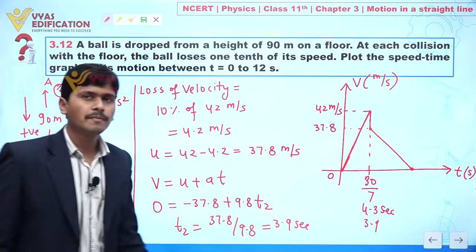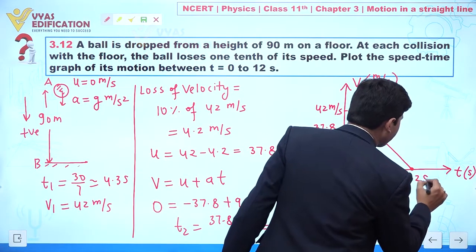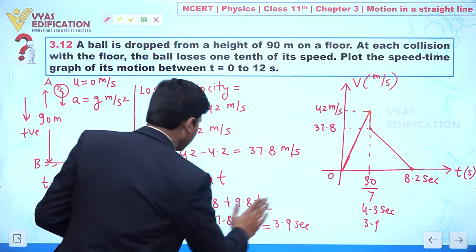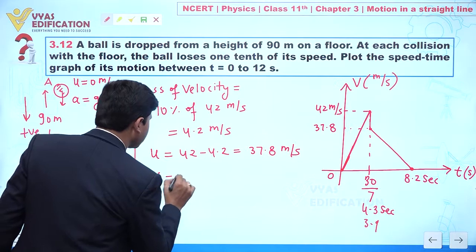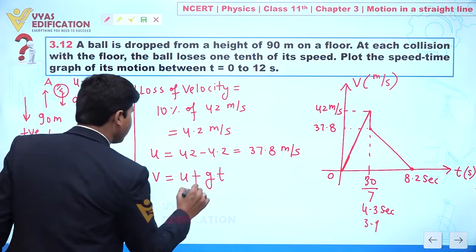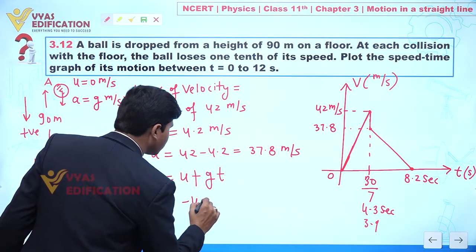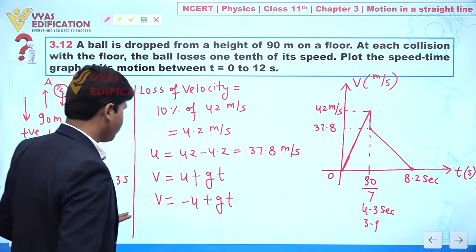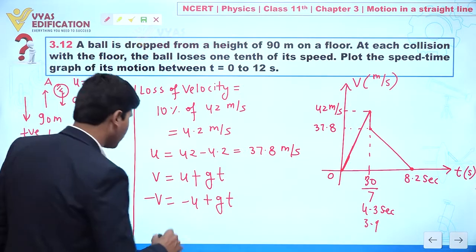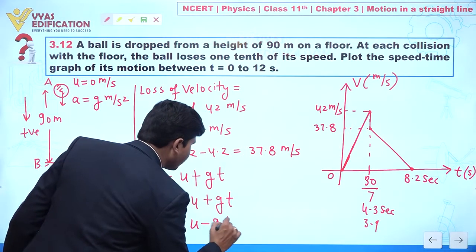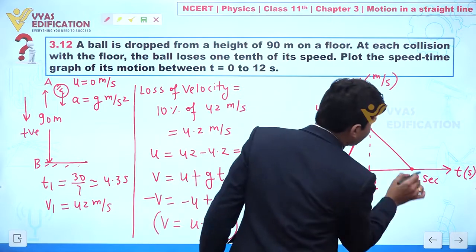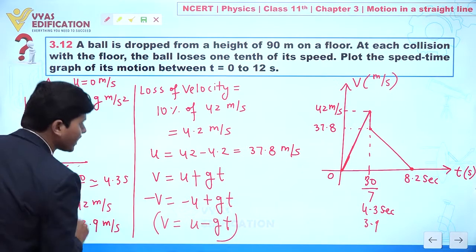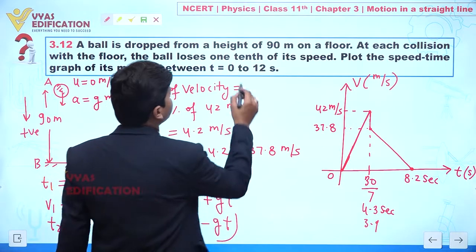The velocity of the ball becomes zero after total 8.2 seconds. In this upward motion phase, we find a negative slope because v equal to u minus gt, giving a negative slope. That is why we draw the graph with a decreasing slope in this region. Time t2 is 3.9 seconds.